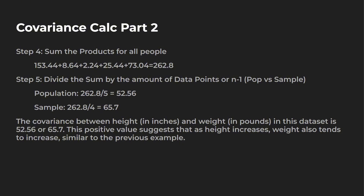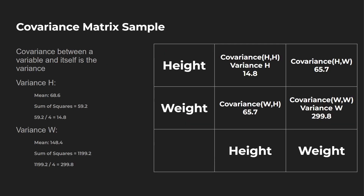So now we know how to calculate covariance manually. I also want to show you, before jumping into the code, how a matrix looks — I'm going to be taking a look specifically at sample. Here's how our sample covariance matrix looks: we're going to have height by weight. Your top right and your bottom left is going to be your covariance of height and weight, which we just went through that whole calculation. What I find interesting is the top left — height by height — that's just the variance of height. The bottom right — weight by weight — that's just the variance of weight.